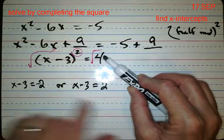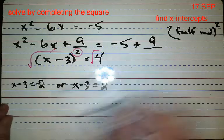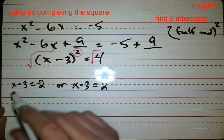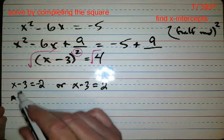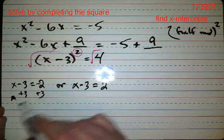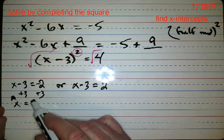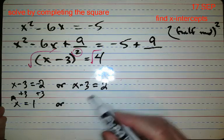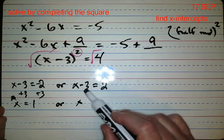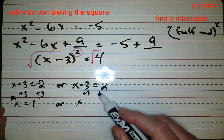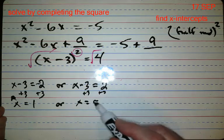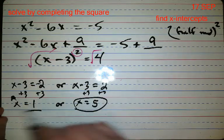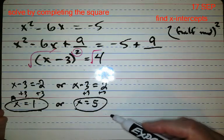You have to write them both down, right? And now to solve this, you're going to add three to both sides, right? So I add three, x is one because negative two plus three is one, or x is—now I add three over here—x is five.